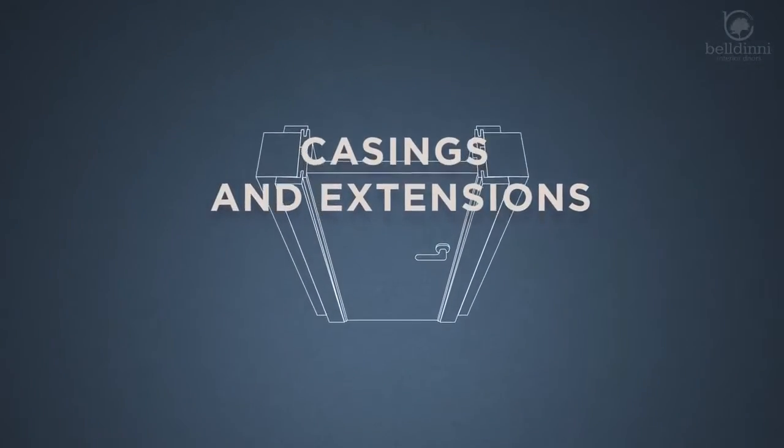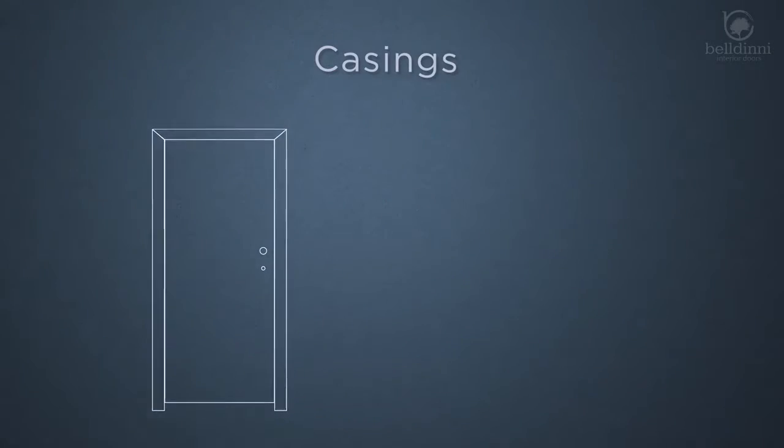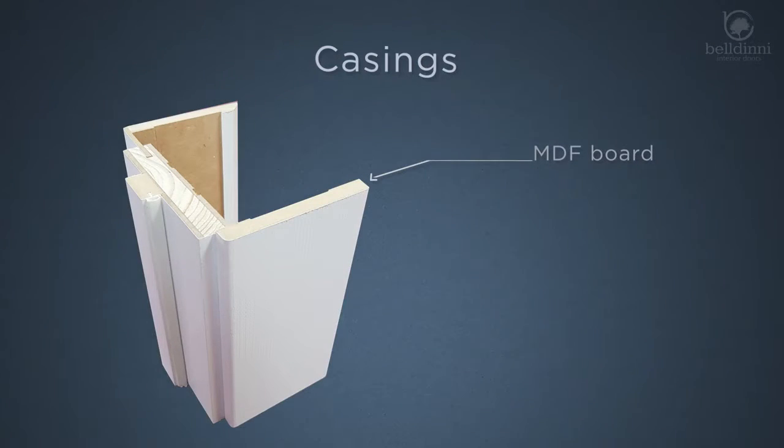Casings and Extensions. Casing is a type of molding, typically used to trim the perimeter of doors. Beldini casings are made of MDF board, coated with the highest quality finishes.